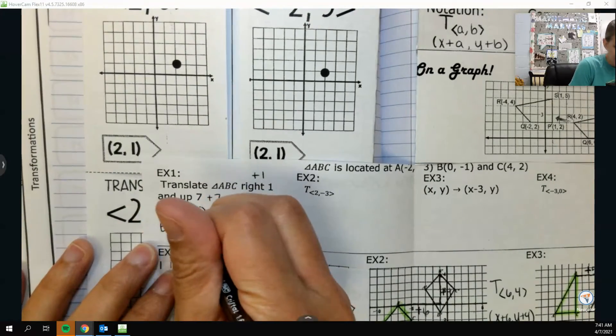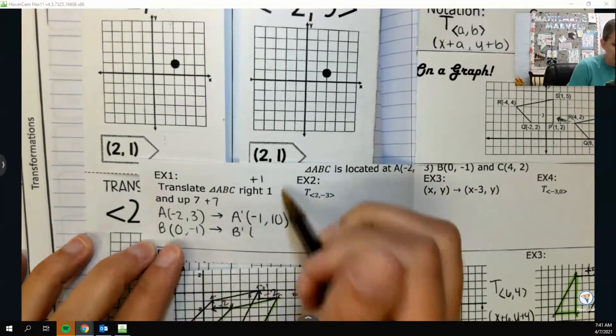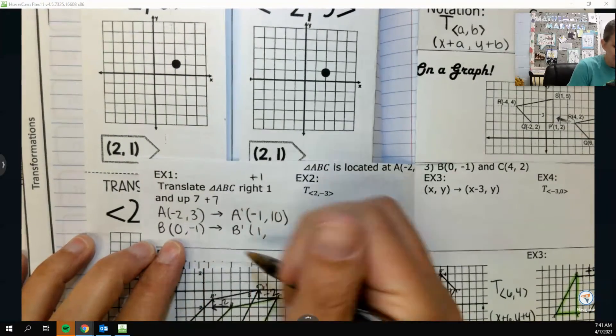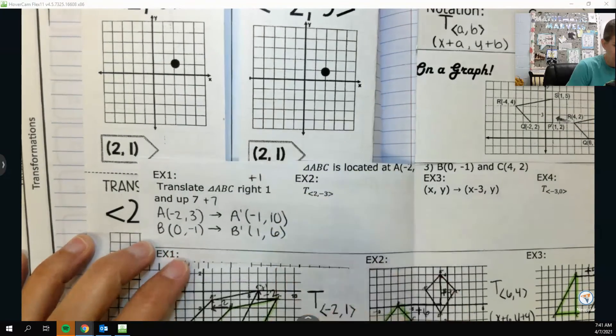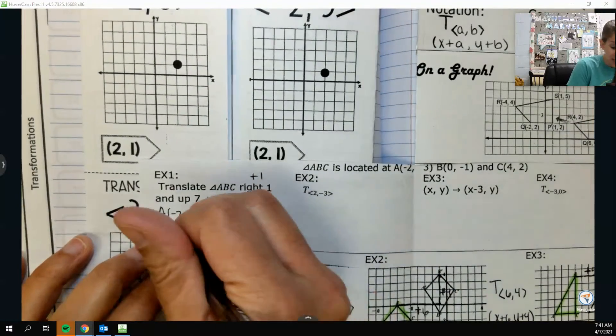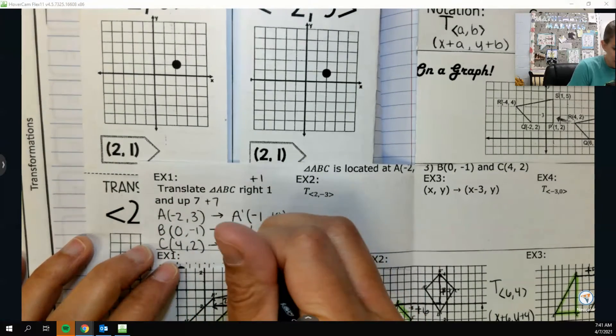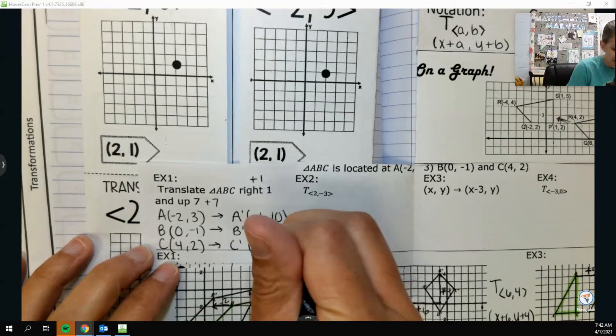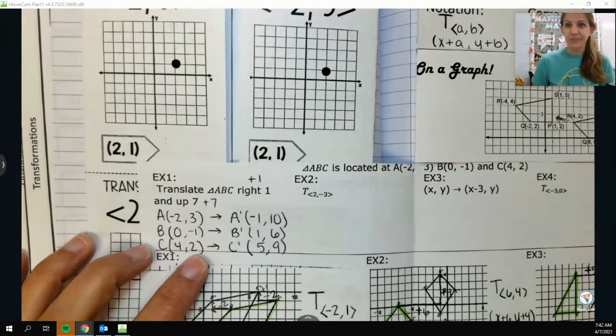B is at 0, negative 1, and that should also move in the same direction. So if I add 1 to x and add 7 to y, there we go. And then, finally, c is at 4, 2. And so, right 1 is going to be c prime is at 5, 9. And there you go.